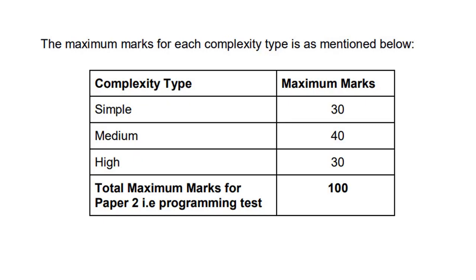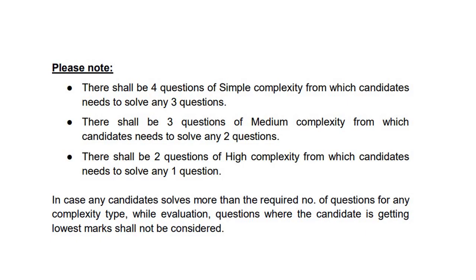The maximum marks for every category: for simple it will be 30. Although there are 4 questions, even if you attempt all 4 you will still get a maximum of 30 marks. For medium, 2 questions at 20 marks each gives 40 marks maximum. For high, 1 question is worth 30 marks. The total maximum marks for Phase 2 — the programming test — will be 100. Note that in every section there is a maximum limit and you cannot go beyond it. If you attempt more than the required number, you won't get any extra marks for writing extra answers.